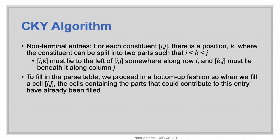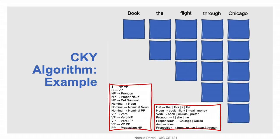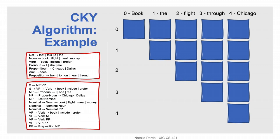To fill the table, we just start from the metaphorical bottom — the cells along the diagonal — and move our way up, filling each cell based on the parts that have already been filled before it. I'll illustrate this more concretely with an example. So let's say we have the sentence: 'book the flight through Chicago.' We have our context-free grammar and our lexicon. We'll start with our matrix completely empty, with only the upper triangular half shown. The first thing we need to do is convert our grammar to Chomsky Normal Form, and then we can begin filling in our table.